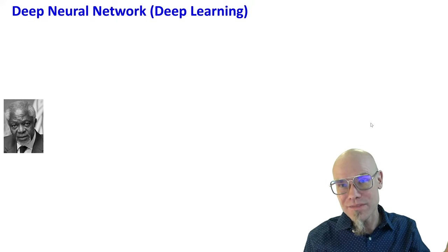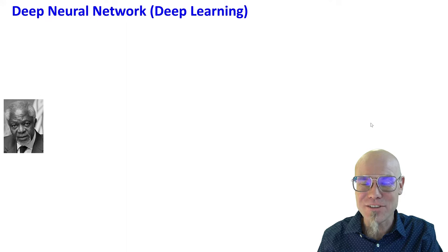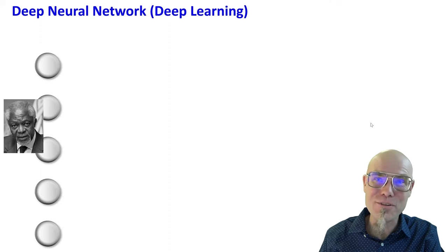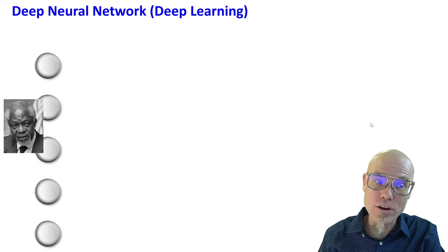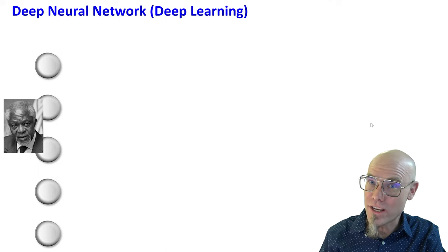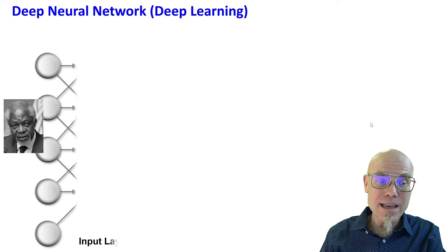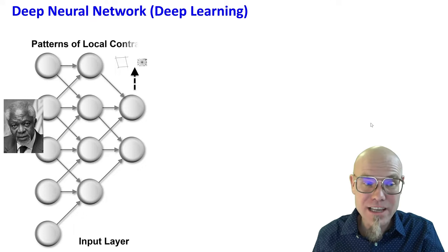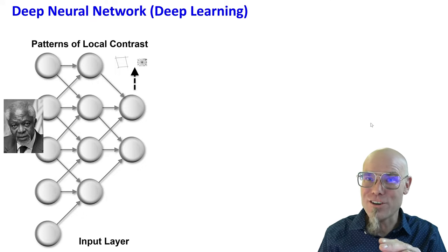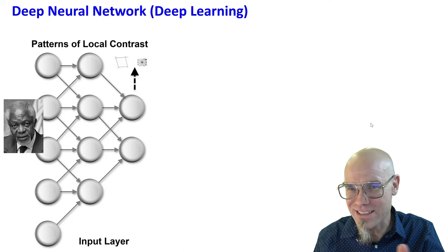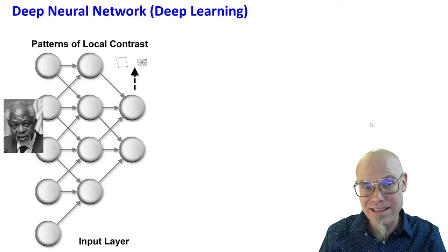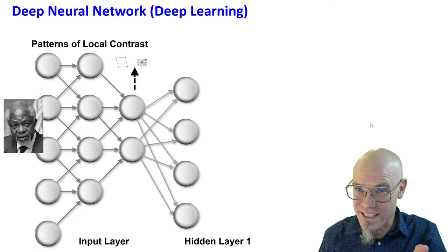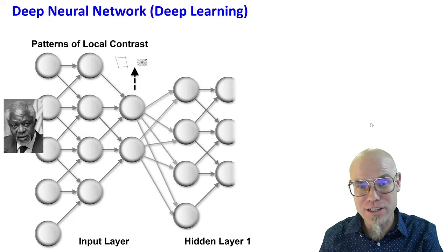Here I have an image of my former boss at the United Nations — one of my personal idols. I want the network to learn who that is. So the neural network recognizes pixels through the input layer, then transforms them across different layers, recognizing lines and circles. We start with recognizing contrast — black versus not black — then lines and circles. That's why it's called deep learning: it learns by processing over different layers.